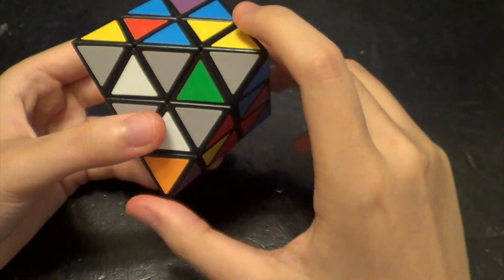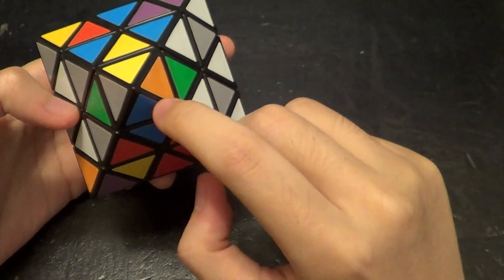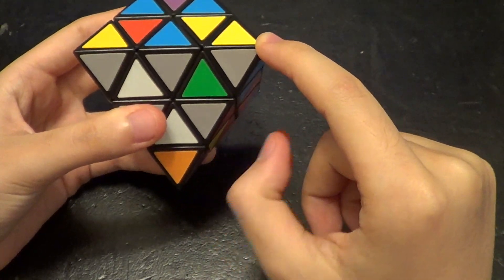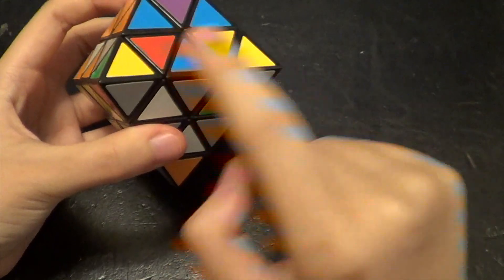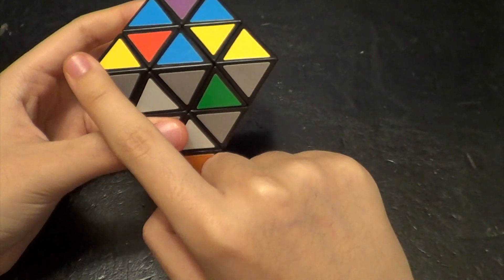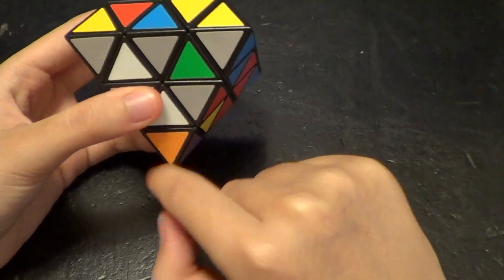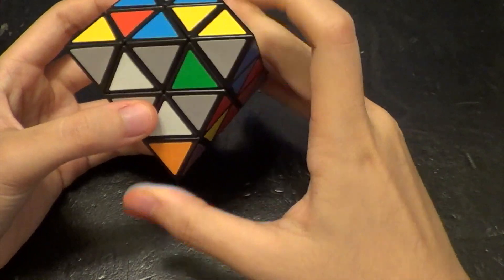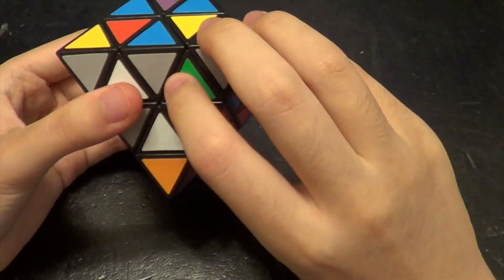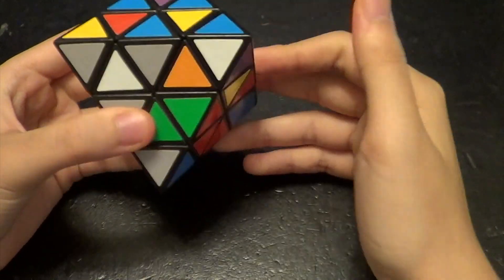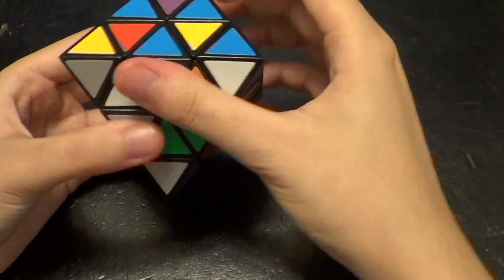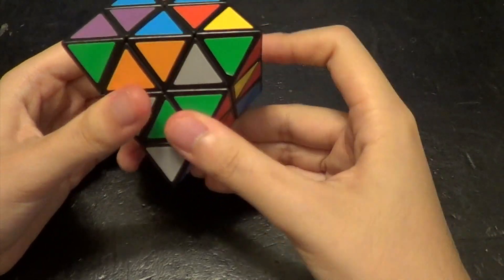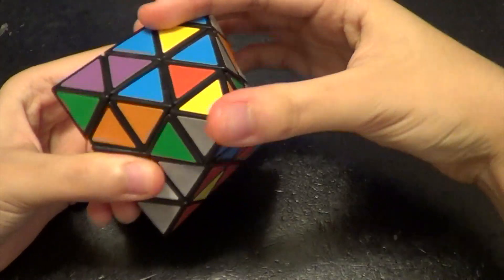So we want to cycle upper right to upper left, and then upper left to left and right intersections. So how we can do this is just do right clockwise, up counterclockwise, right counterclockwise, and up clockwise.